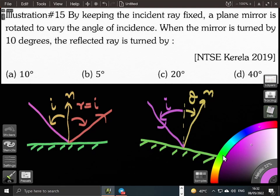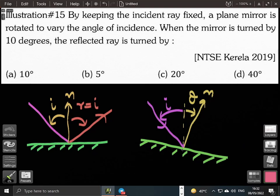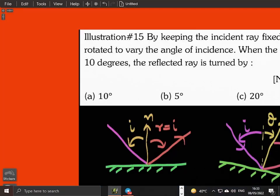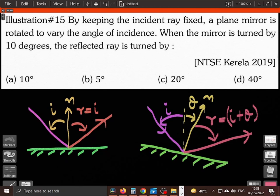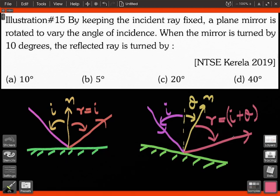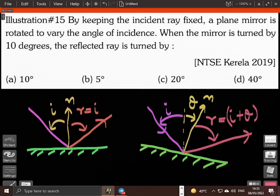Right, so the new reflected ray will go out at an angle r. This angle, as per the law of reflection, will be equal to the angle of incidence. You can imagine the new angle of incidence is with respect to the new normal, right?